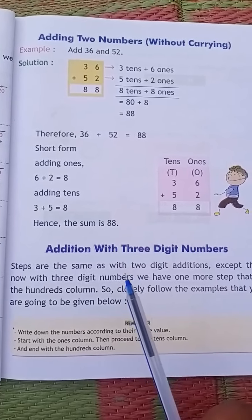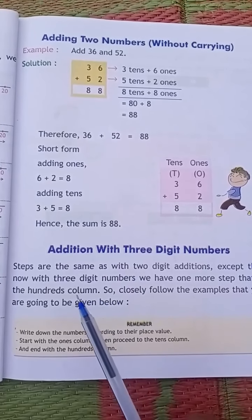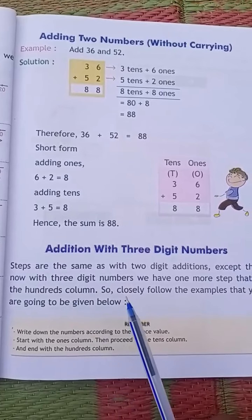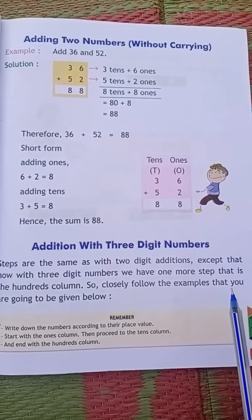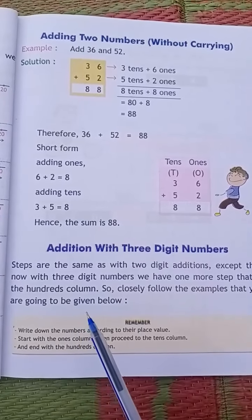For three digit numbers the addition will be the same as for two digits, but here there is one more column, the hundreds column. So closely follow the examples that are going to be given below.